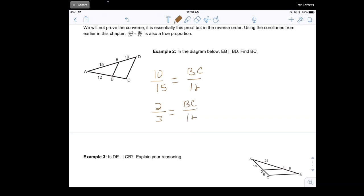And I can just cross-multiply there. 3BC is equal to 24. So divide both sides by 3, and BC is equal to 8.